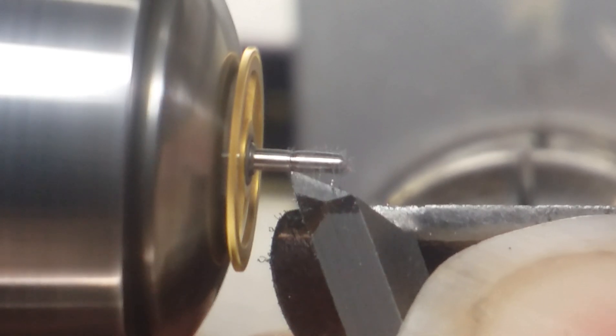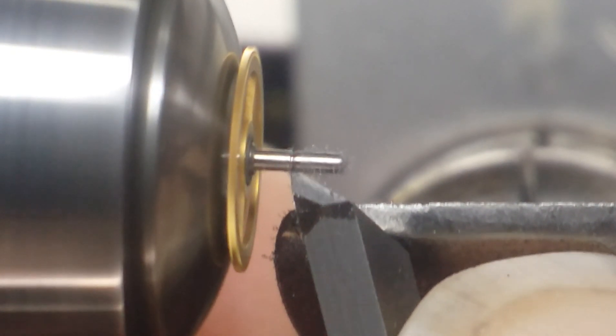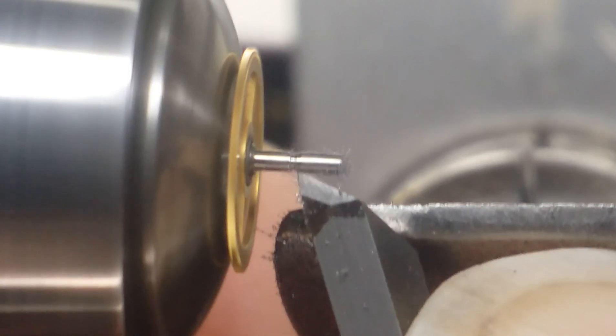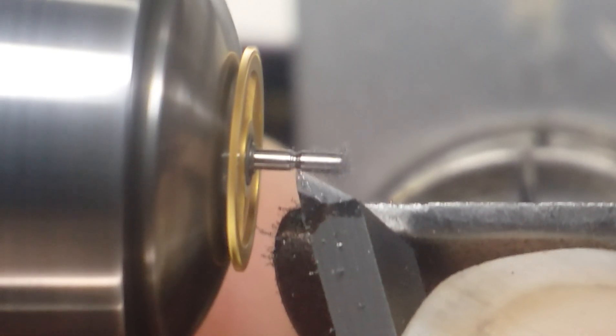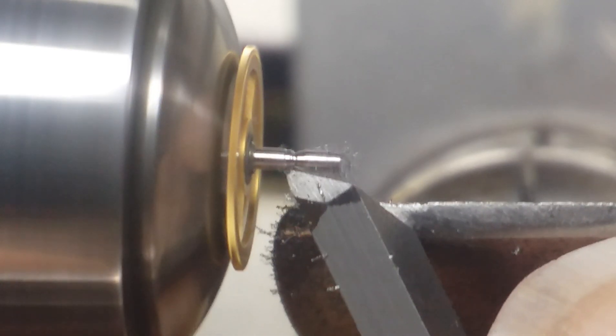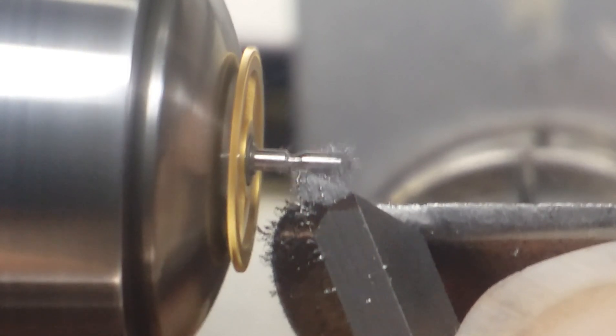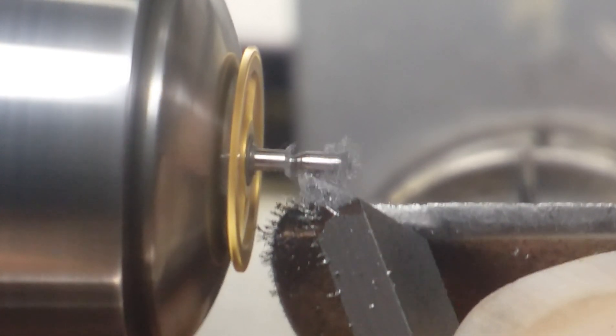And lastly, while we're chucked up onto the pinion, we will finish out the back pivot and reduce it from the diameter that it is to the 0.50 and reduce the excess length to a more appropriate length.